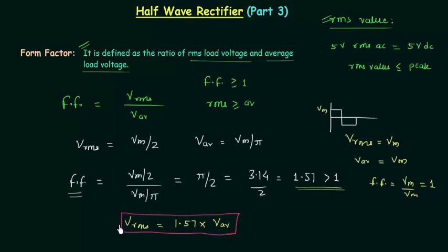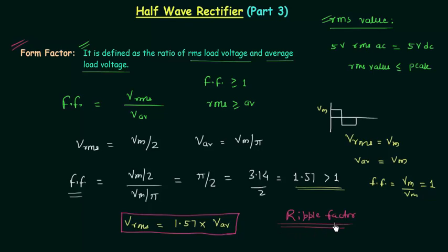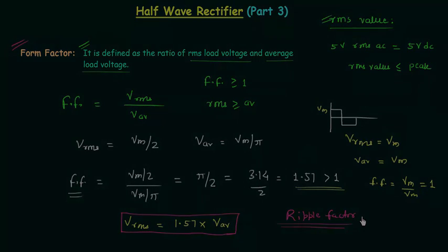The form factor is equal to 1.57, meaning the RMS value of load voltage is equal to 1.57 times the average value of load voltage. This is what we can derive from the obtained result. I will end this lecture here — this was all you need to know about form factor. In the next lecture we will discuss ripple factor. I will explain what ripple factor is and we will also derive the formula for it.